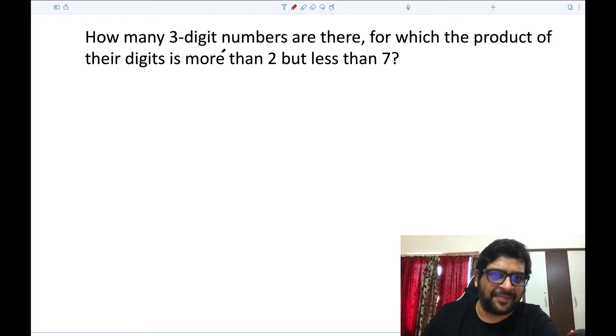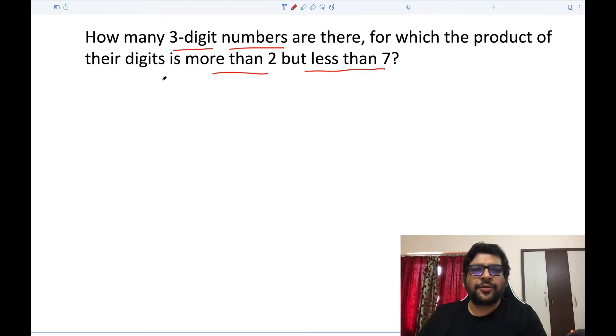Hi everyone and welcome to Unacademy. In this question we are given: How many three-digit numbers are there for which the product of their digits is more than two but less than seven? So suppose your three-digit number is a, b, c.